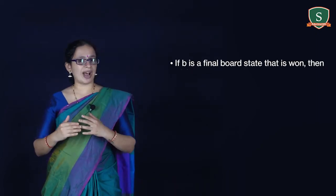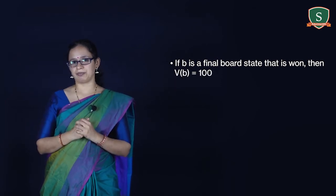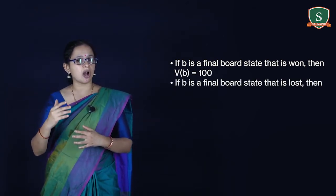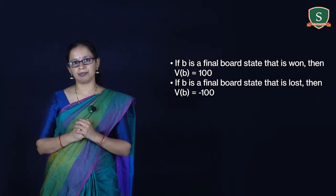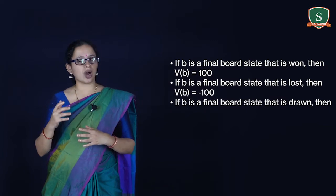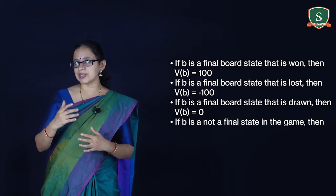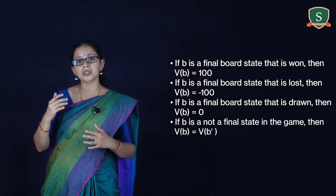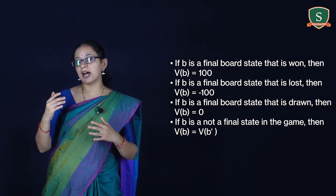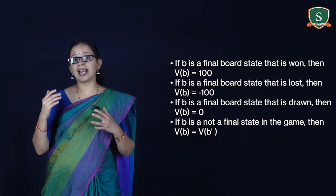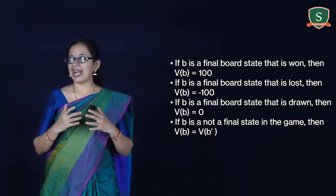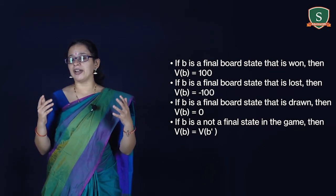The target value V(B) for any arbitrary board state B is defined as follows: if B is a final board state that is won, V(B) = 100; if B is a final board state that is lost, V(B) = −100; if B is a final board state that is drawn, V(B) = 0; if B is not a final state, V(B) = V(B'), where B' is the best final board state achievable from B playing optimally until the end of the game.